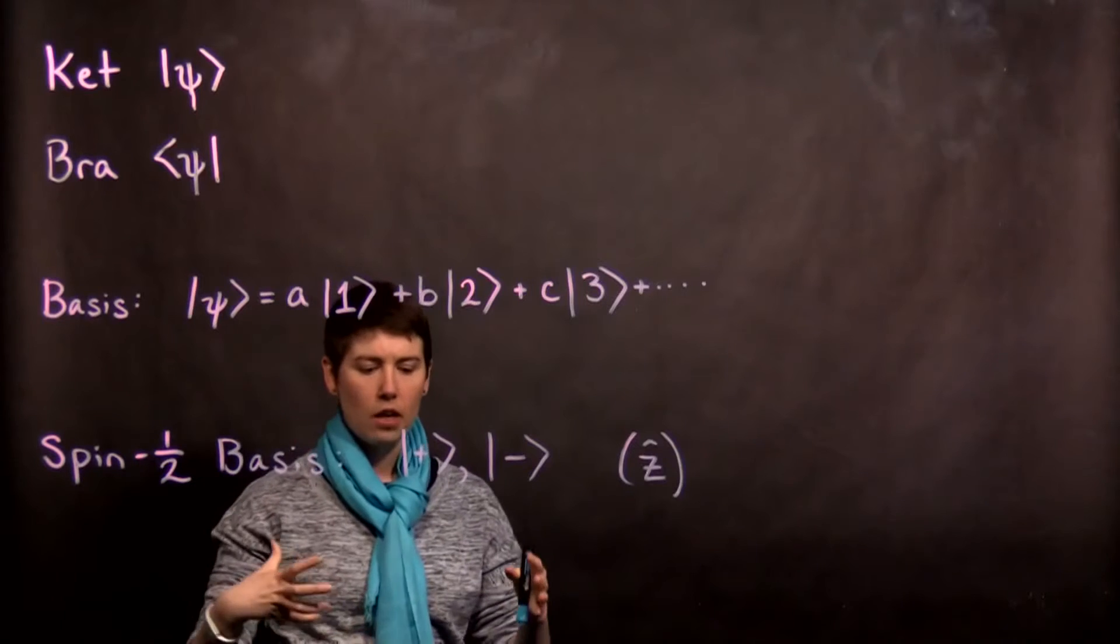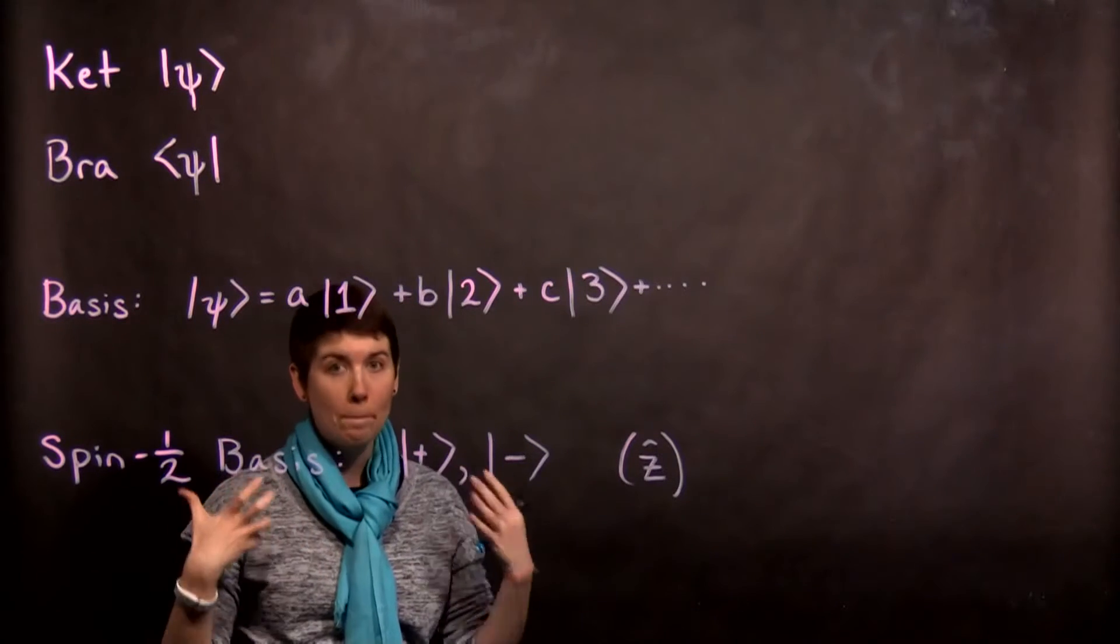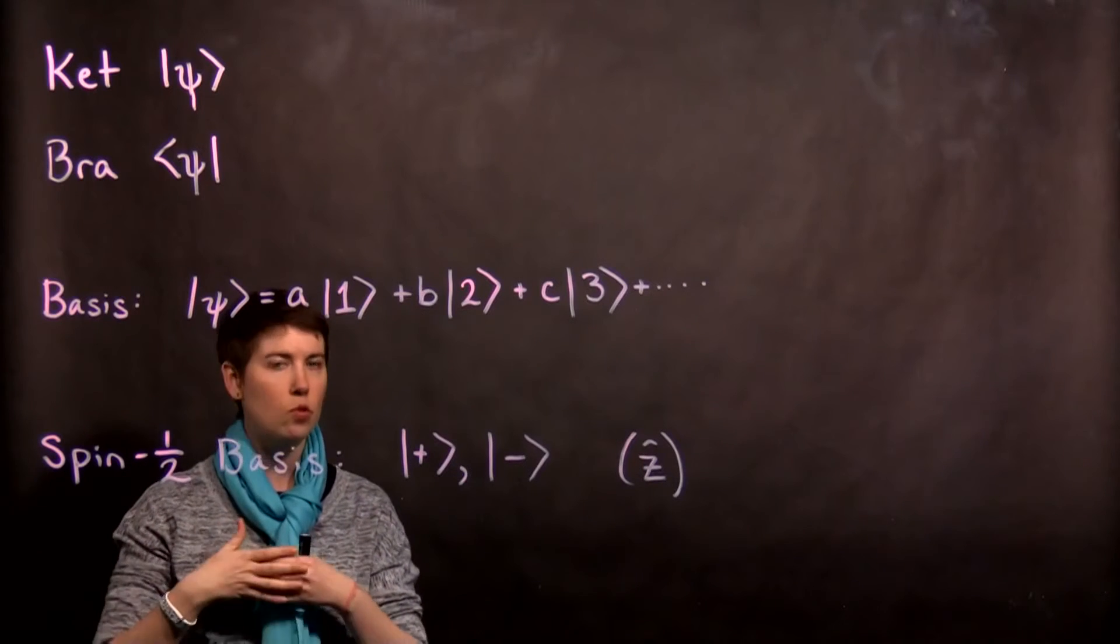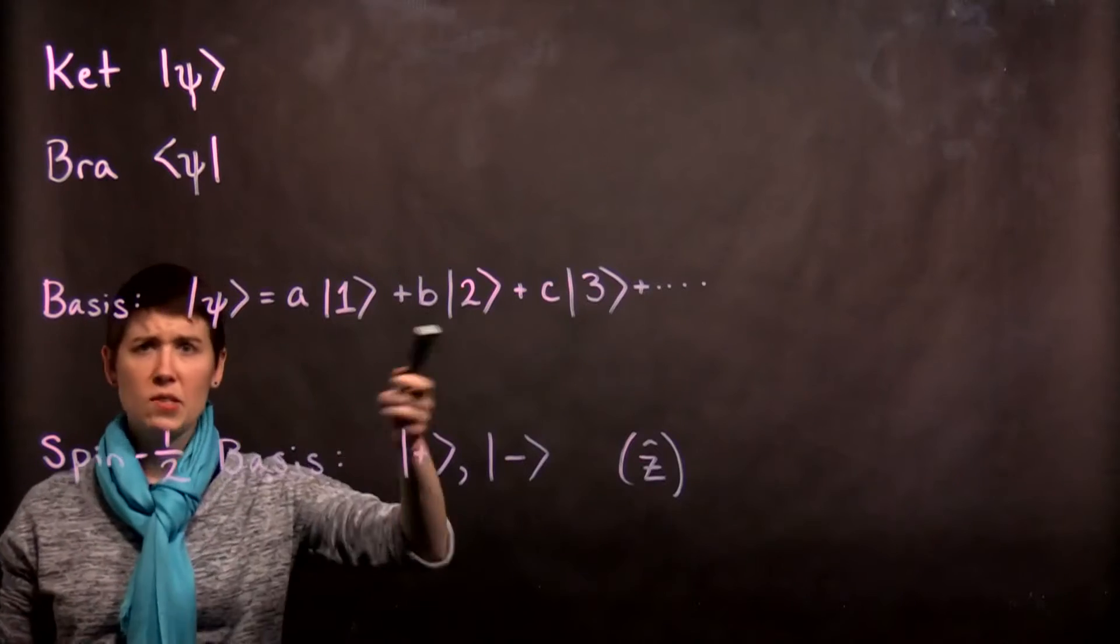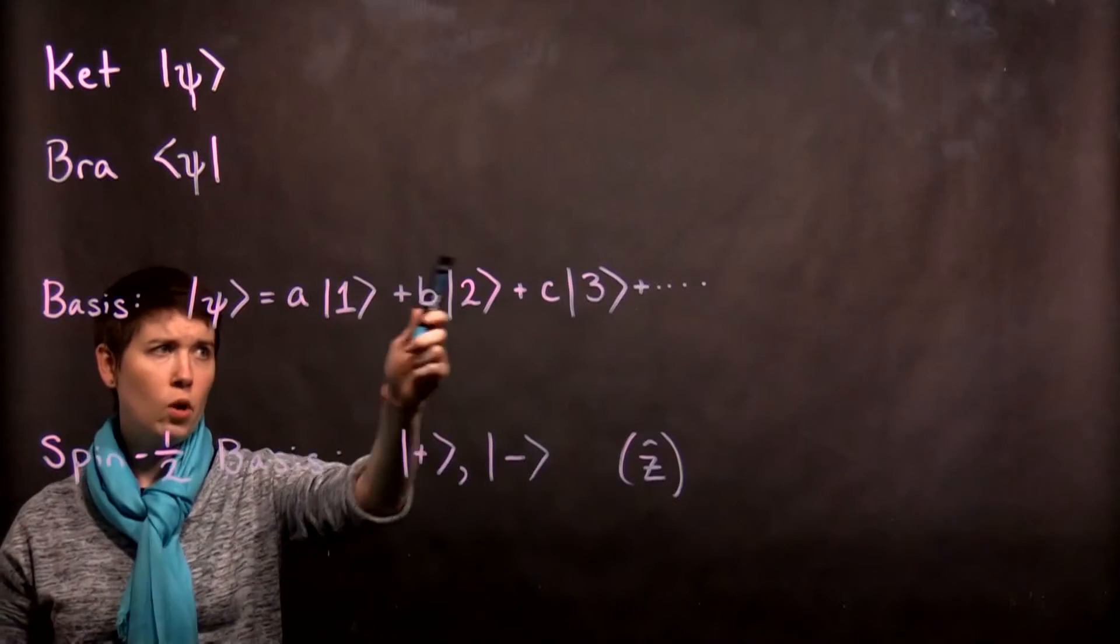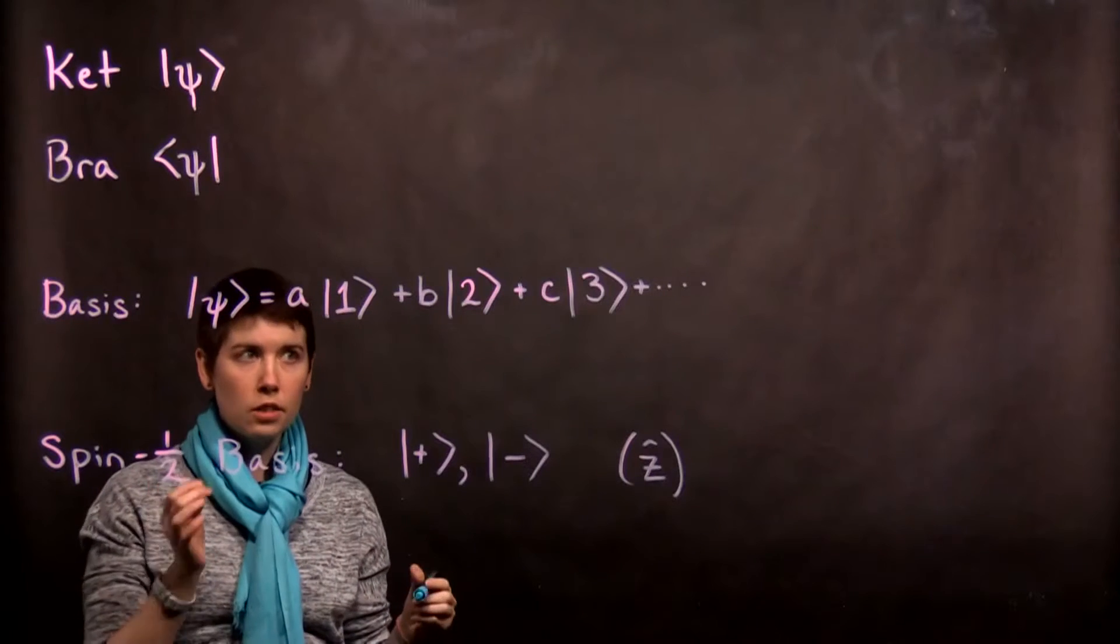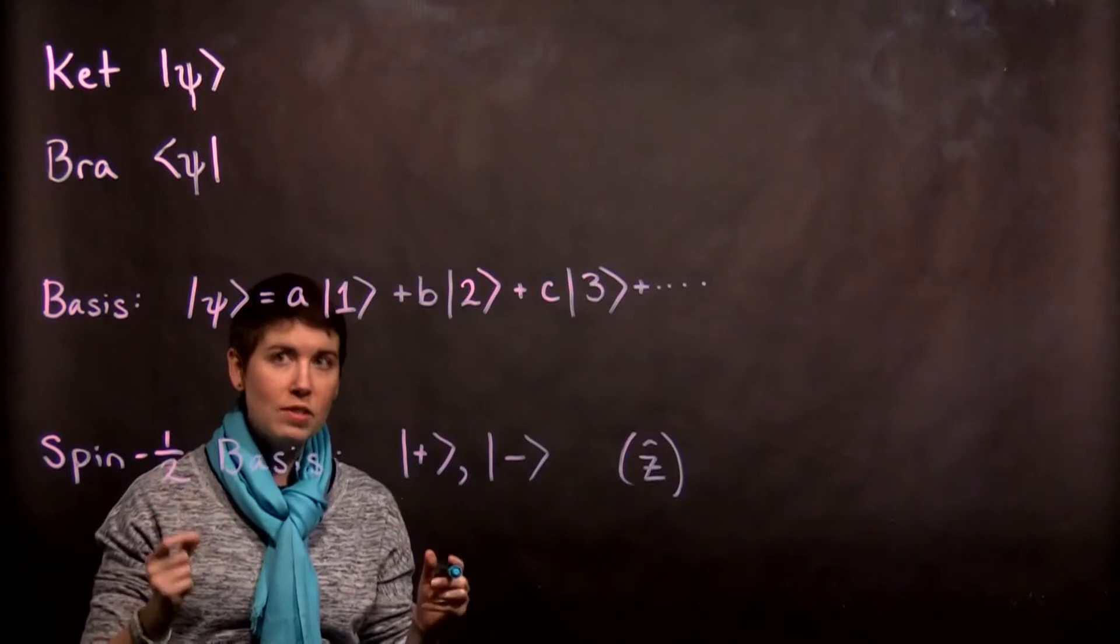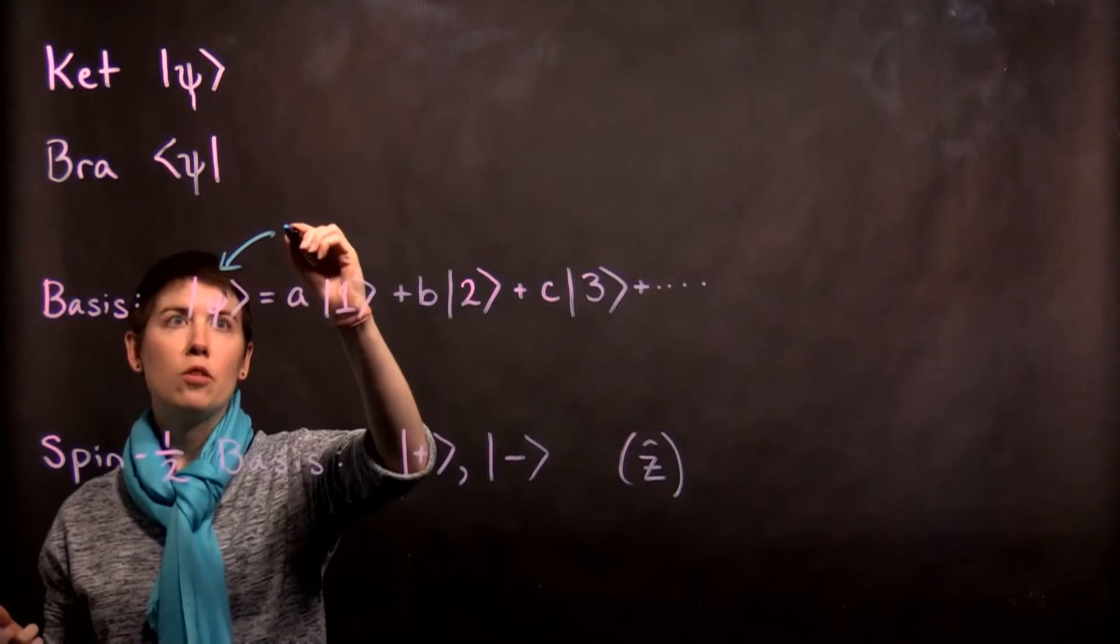Now the idea is that our quantum state is going to be expressed in some basis. It's a vector space, so there's some basis vectors that we can use to span the space. Now in this case I'm just going to give them some, you know, one, two, three random numbers. And the key here to know is that for a physically meaningful ket, this needs to be normalized.